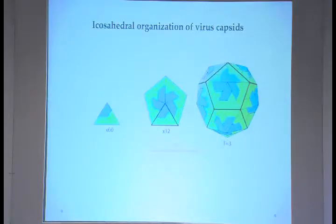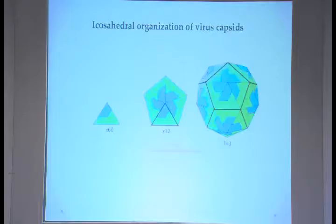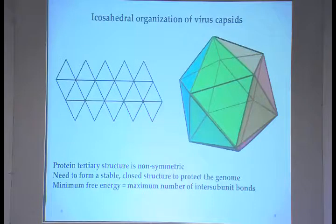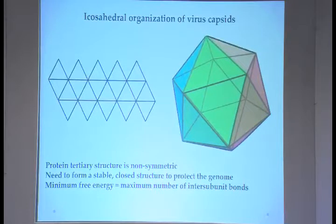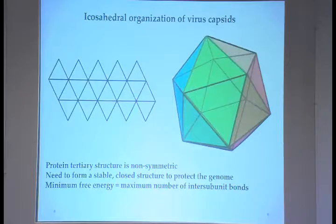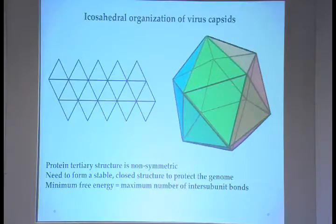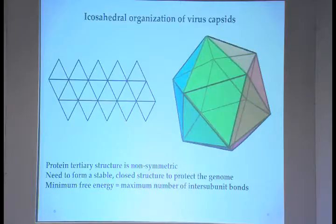These pentameric and hexameric subunits get together and make a capsid. The faces are basically equilateral triangles, and there is a five-fold axis of symmetry. The two-folds are in between edges, and the three-folds are in the middle of the triangular faces.